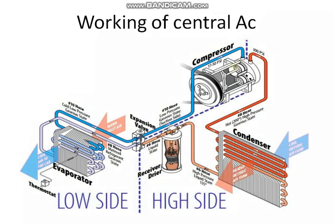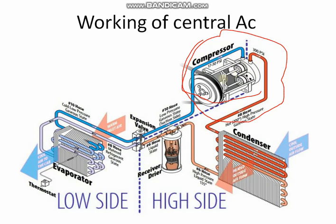Now let's look at how a central AC system works — you can see a diagram on the screen. You have a compressor, and this is the cooling system — the evaporator — and this is the condenser. The compressor contains a liquid or gas. It works on the principle similar to a perfume bottle: highly pressurized gas is inside, and when sprayed it produces a cooling effect. Similarly, in the AC system, a gas — most commonly chlorofluorocarbons, though CFCs are now banned and different gases are used today — is compressed.